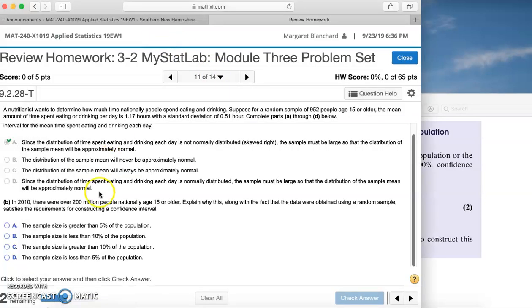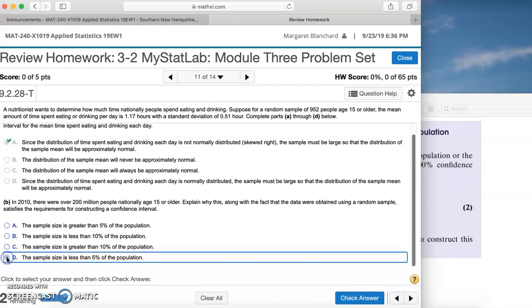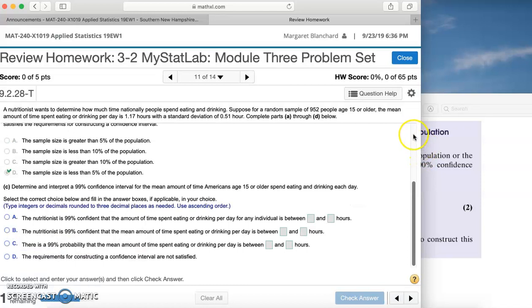Let's look over here to see if that's an option. Here we have: the sample size is greater than 5% - that's not it. The sample size is less than 10% - we already know it's not 10%. Sample size is greater than 10% - also not it. The sample size is less than 5% of the population, and that's exactly what we just found in our definition there.